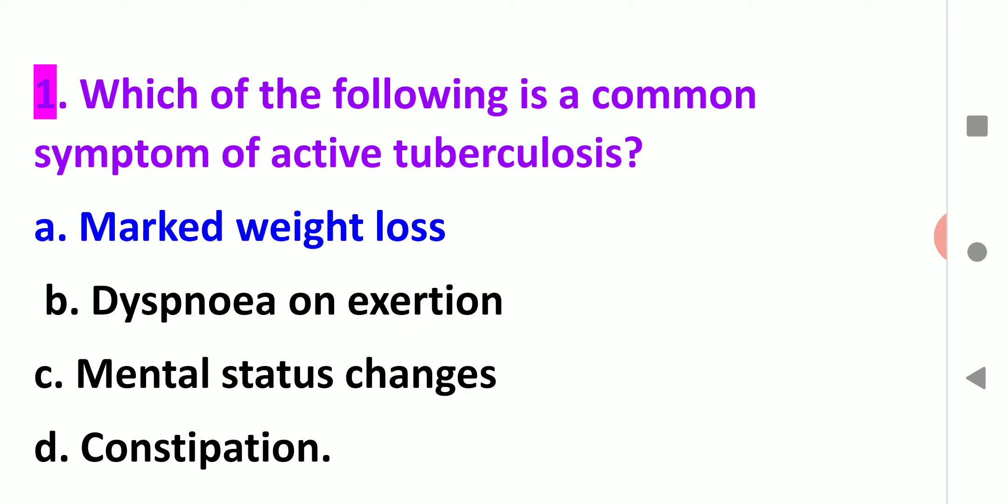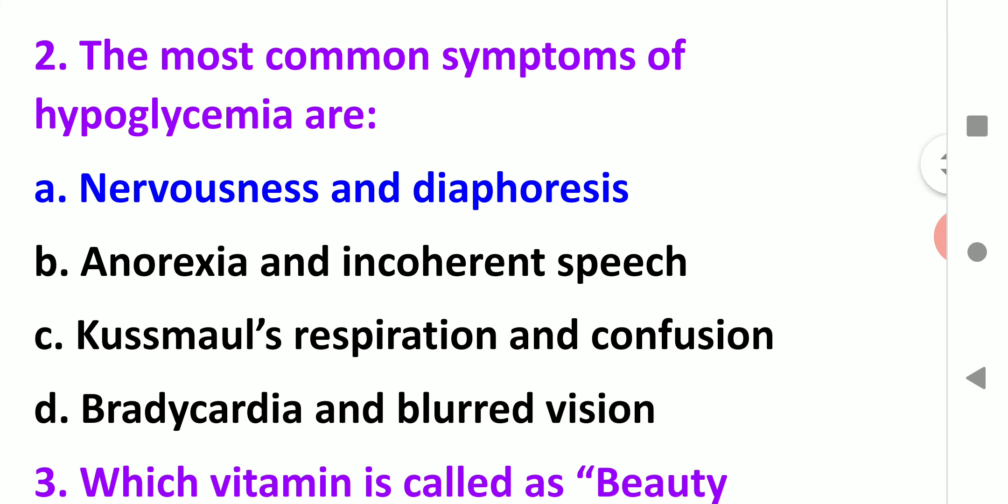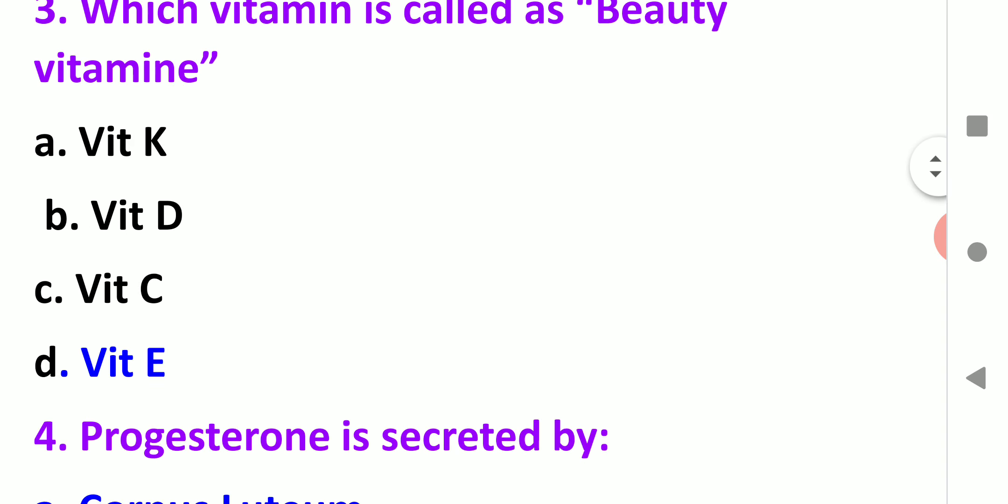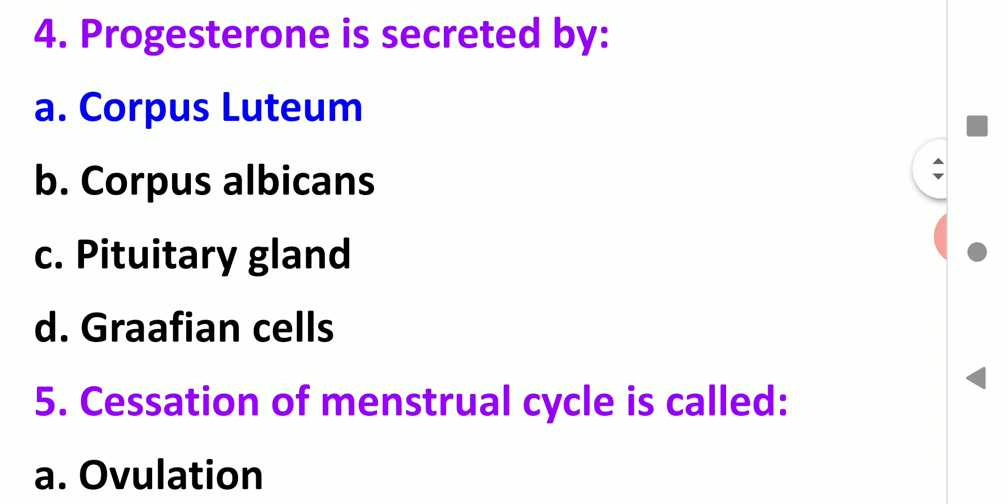The first question is: Which of the following is a common symptom of active tuberculosis? In active tuberculosis, the common symptom you will see is marked weight loss. Next, the most common symptom of hypoglycemia. In hypoglycemia, the most common symptom that can be seen is nervousness and diaphoresis. What is diaphoresis? It is excessive sweating.